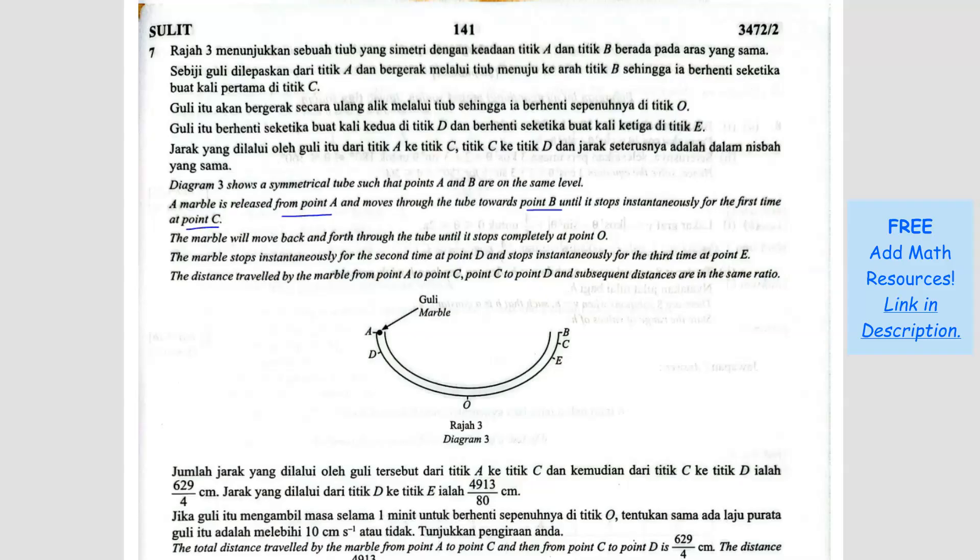The marble will move back and forth through the tube until it stops completely at point O. The marble stops instantaneously for the second time at point D and stops instantaneously the third time at point E. The descent travels the same ratio, so you know it is geometric progression.